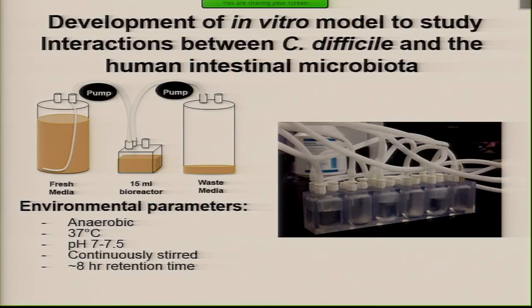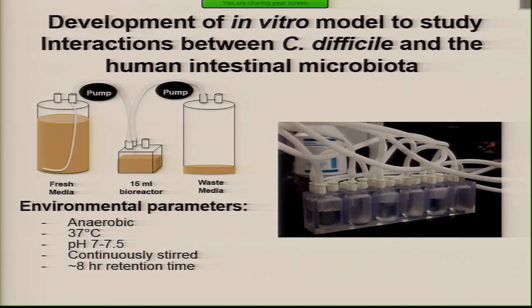So we decided to miniaturize it — we invented these mini bioreactor arrays. Essentially, this is just plastic you can order from a company; they will do anything you want to it. You can get four of these little blocks for $900, so they're not really that expensive. You can autoclave them, and they're reusable. Because they're so small, we run them right in the anaerobic chamber, heated to 37 degrees. We got rid of the need for dynamic pH monitoring by using a buffering system. We have a continuously stirred system with a little stir bar, and you can run them at different retention times using peristaltic pumps.